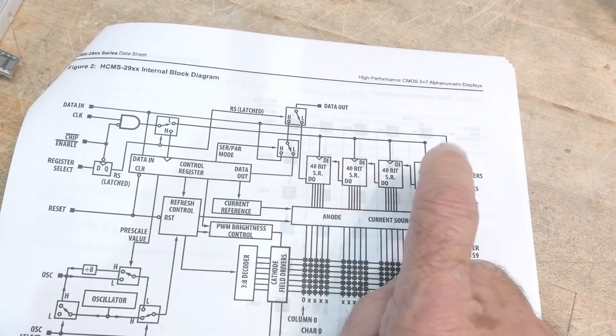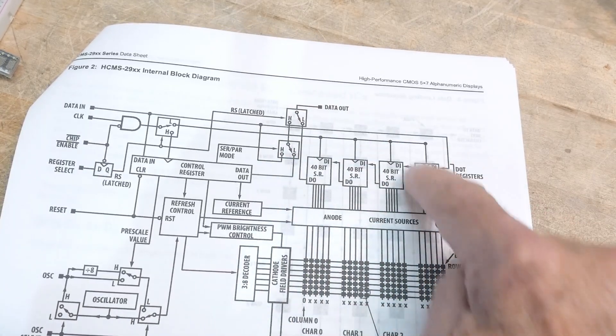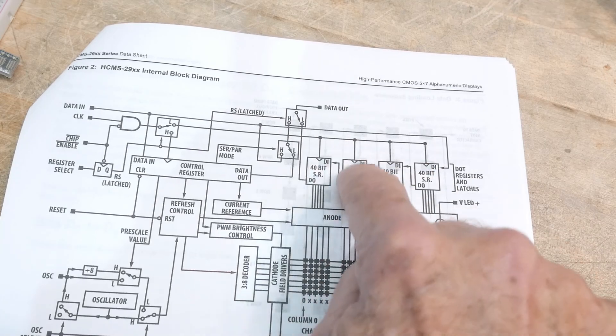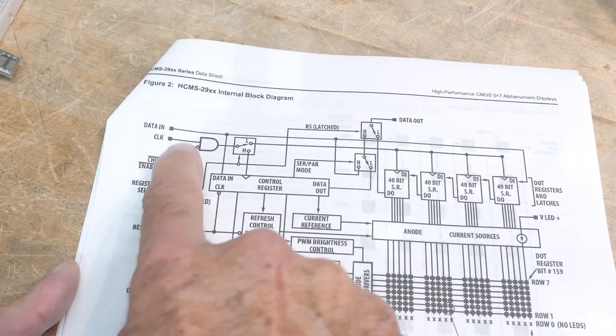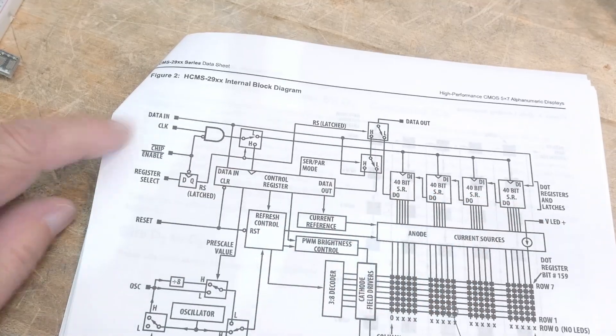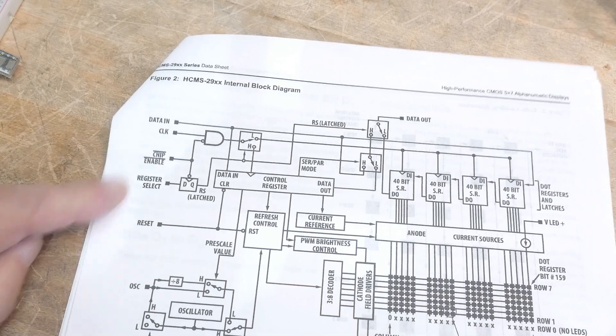Here are the shift registers, so 40-bit, 40-bit, 40-bit, 40-bit shift register. Data comes in here. It goes into there, goes into there, goes into there. So we're going to need some data ins and clocks to get the data in it. Chip enable register select, oscillator select and stuff.